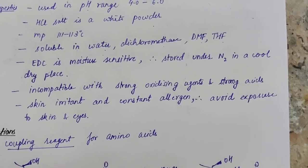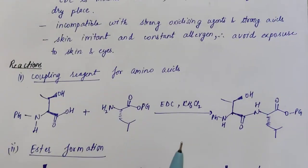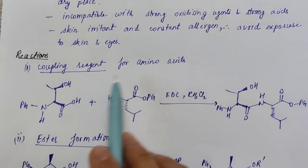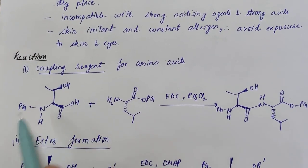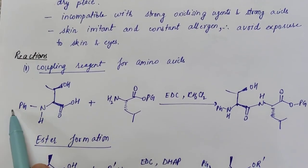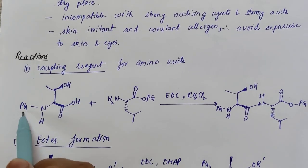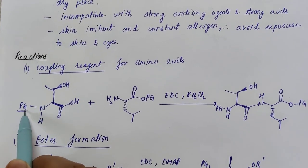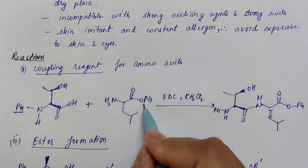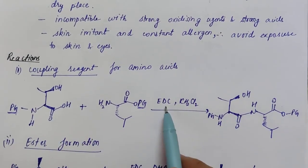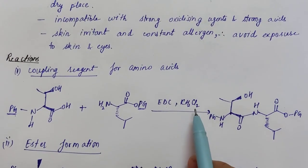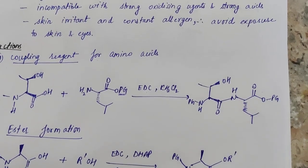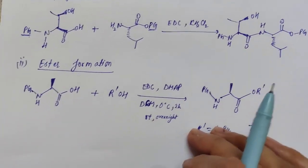Looking at EDCI reactions: the first is amino acid coupling for peptide bond formation. The amine group of the first amino acid is protected by a protecting group (PG), and similarly on the other side. EDC in the presence of dichloromethane results in peptide bond formation, similar to DCC.